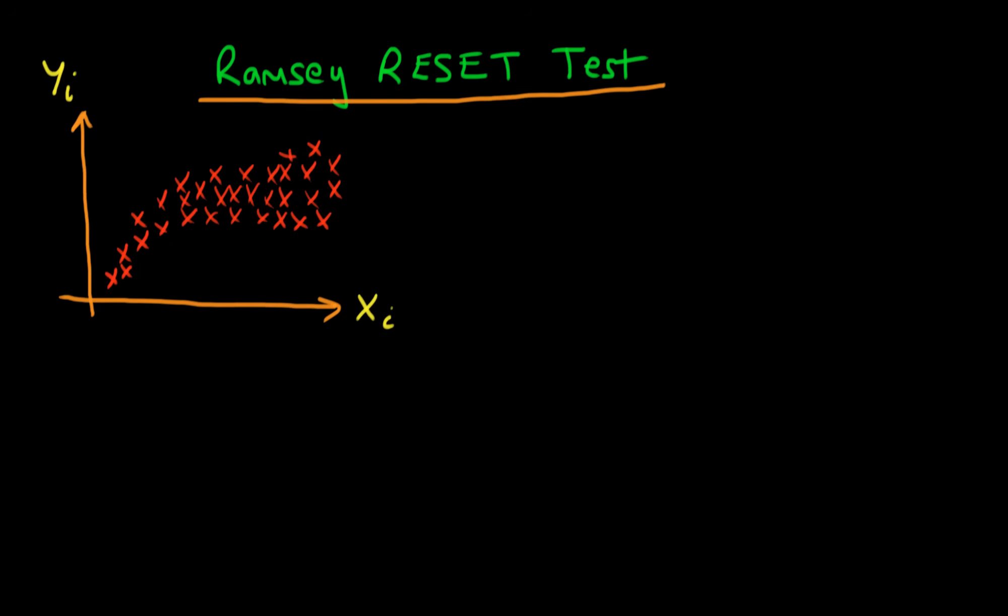In this video I want to talk about the Ramsey RESET Test for functional misspecification. So the idea is that I have some data, some yi and some xi, and maybe I fit a linear model to that data and perhaps my linear model looks something like that. And as you can see as I've drawn it here, the linear model doesn't seem to be fitting the data that well.